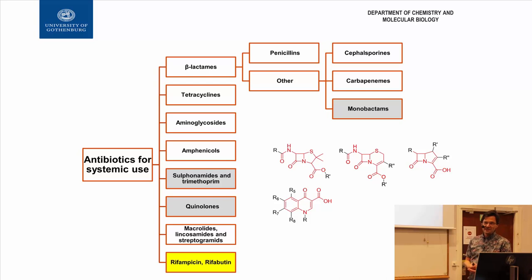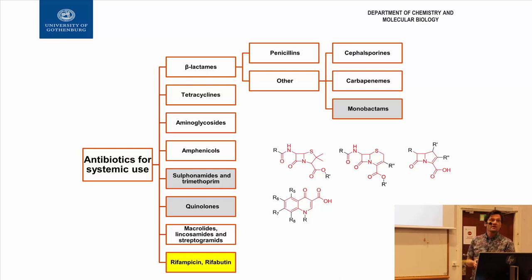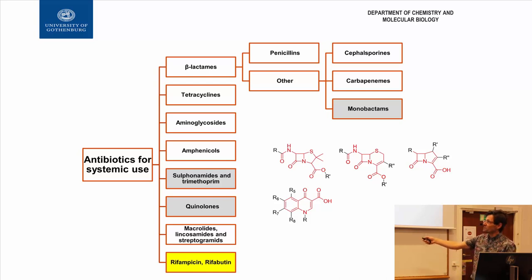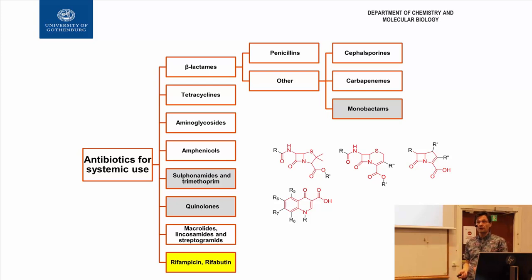So what do we have today in terms of antibiotics? This here shows a slight overview of what's currently available. You have to remember one thing: I'm talking about antibiotics for systemic use. It means you take it as a tablet and it's distributed in your entire body. It's not something applied locally on the skin — that's a different class.